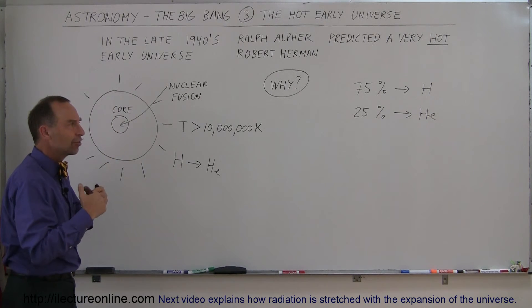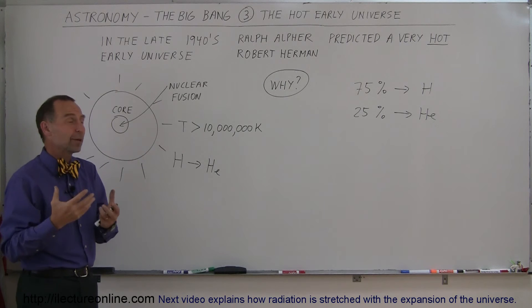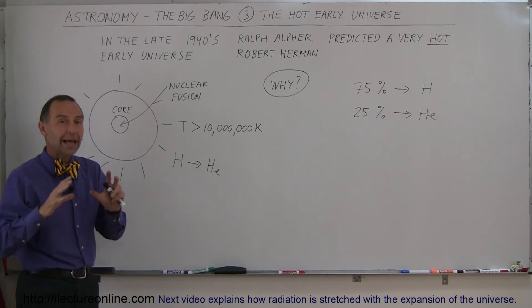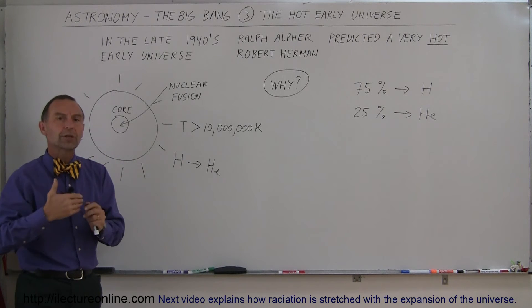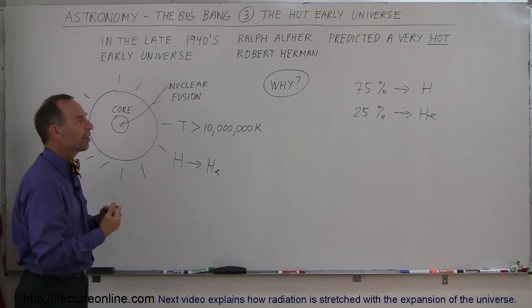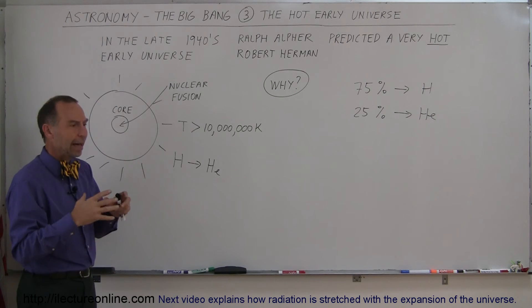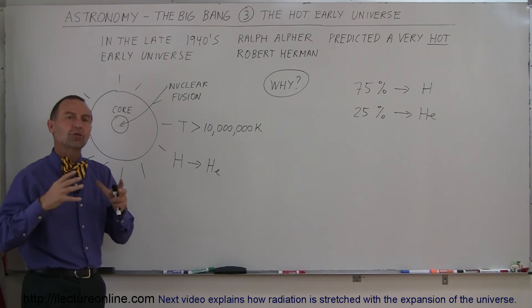So they thought that since 25% of the universe is made up of helium and 75% of hydrogen, at some early stages of the universe, hydrogen must have been converting to helium at a very rapid pace, under probably tremendous temperatures and pressures.